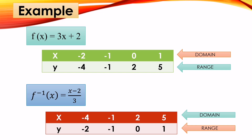Let us have an example. The given function is 3x + 2. The x values of the given function are negative 2, negative 1, 0, and 1. The y values are negative 4, negative 1, 2, and 5. The x values are our domain and the y values are our range. The inverse function is (x − 2)/3. Notice that the x values of the inverse function are negative 4, negative 1, positive 2, and 5 — the original range of the function — while the y values are negative 2, negative 1, 0, and 1 — the original domain of the function. That is why this is an inverse of a one-to-one function.